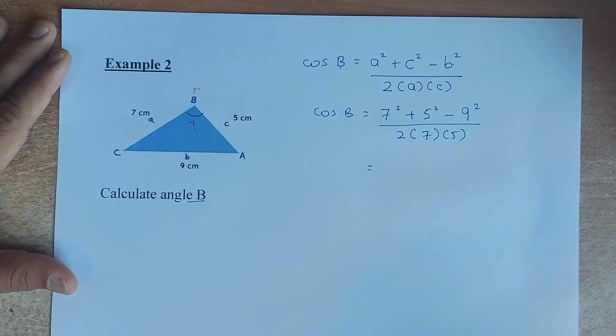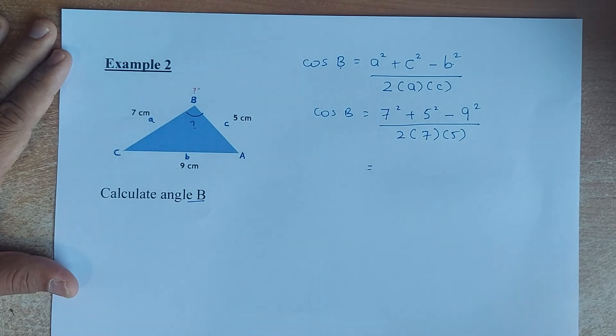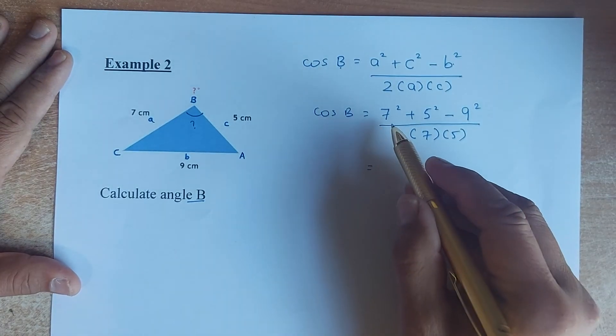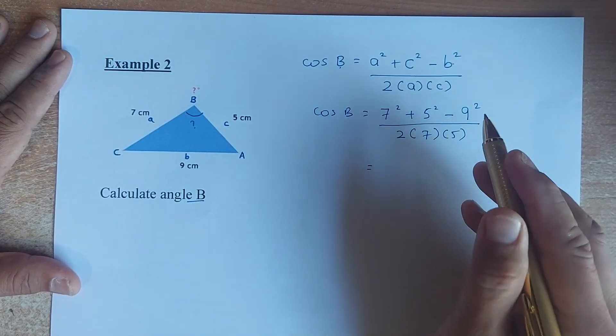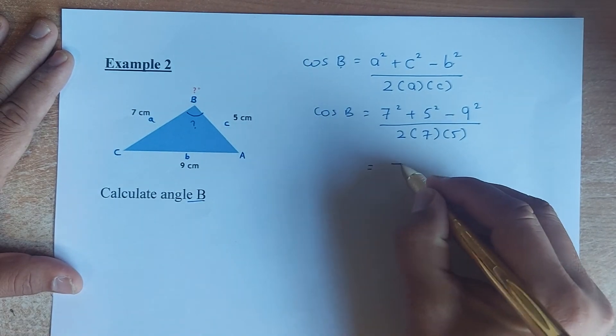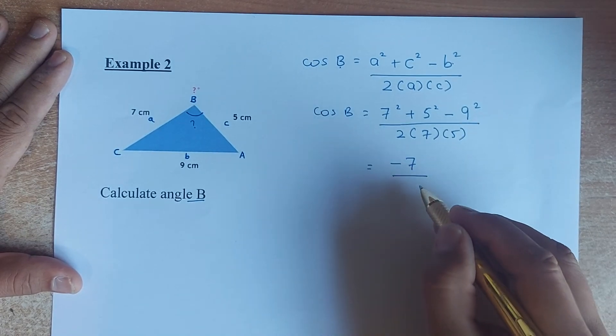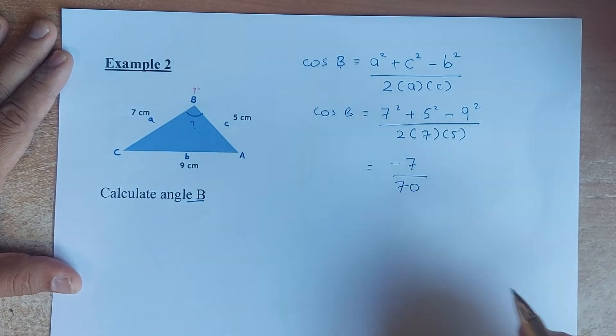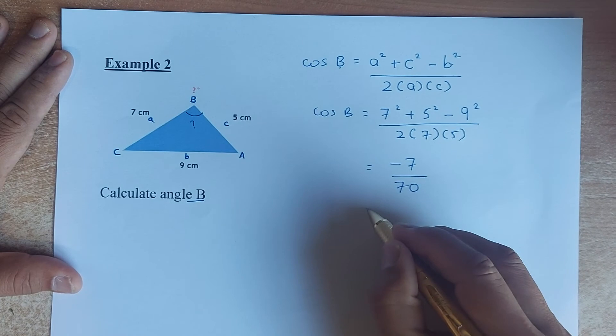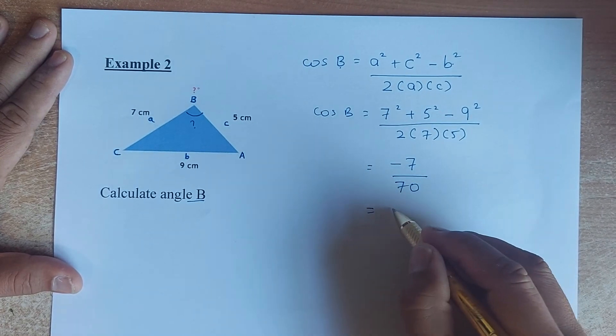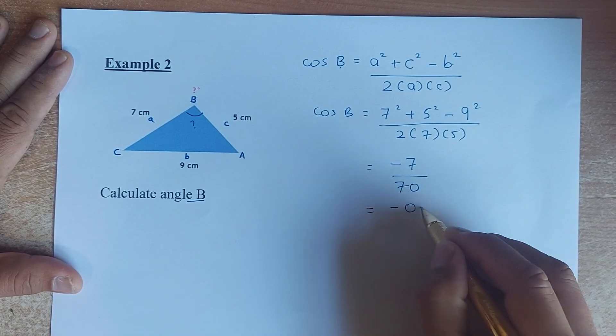Again, I repeat. You are going to do the numerator first and then you divide by the denominator. So put in your calculator 7 squared plus 5 squared minus 9 squared. And our calculator is to be minus 7. And then 2 times 7 times 5. And I found out to be 70. If you put in your calculator again, minus 7 divided by 70 is going to be minus 0.1.